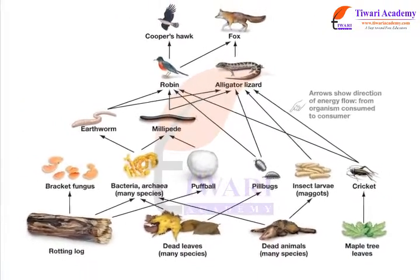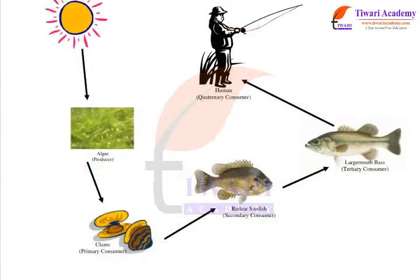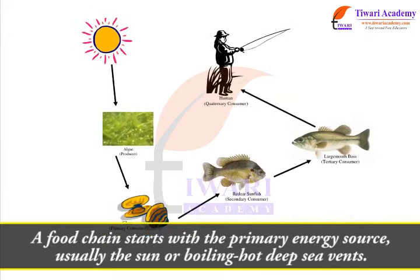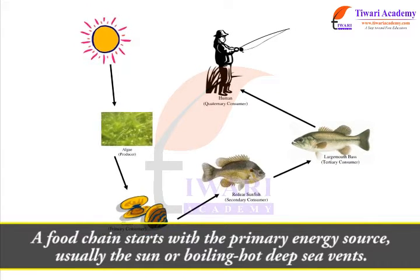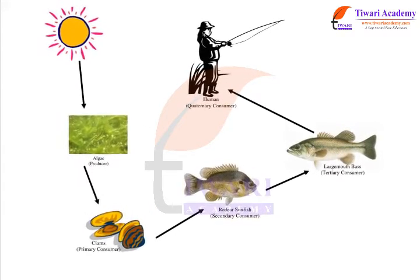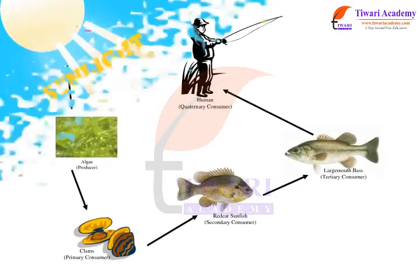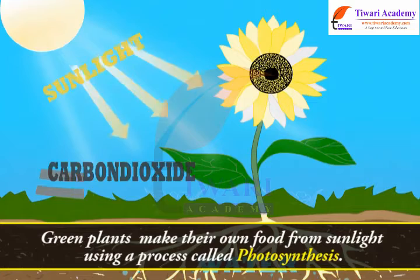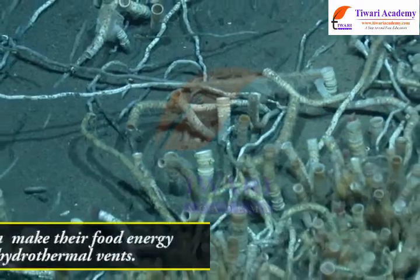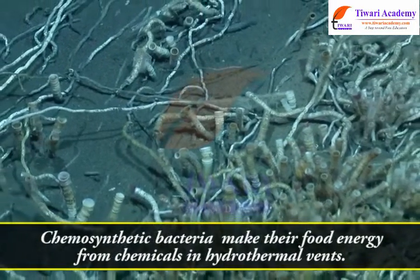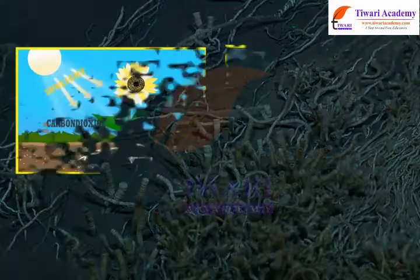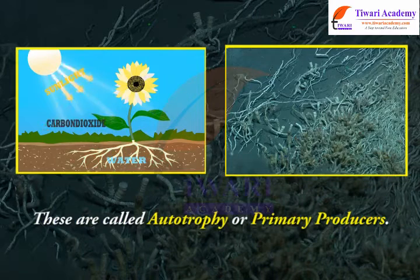A food chain starts with the primary energy source, usually the sun or boiling hot deep-sea vents. The next link is an organism that makes its own food from that energy source. For example, green plants make food from sunlight through photosynthesis, and chemosynthetic bacteria make food from chemicals in hydrothermal vents. These are called autotrophs, or primary producers.